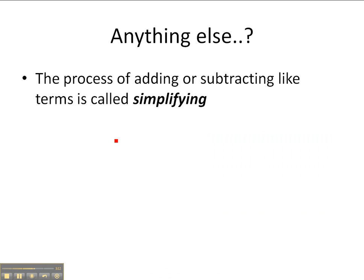The one last thing to look at when it comes to like terms is the process of adding or subtracting like terms is called simplifying and it's very important. I wanted to have a look at a couple of examples. Let's look at 4g plus 6g.